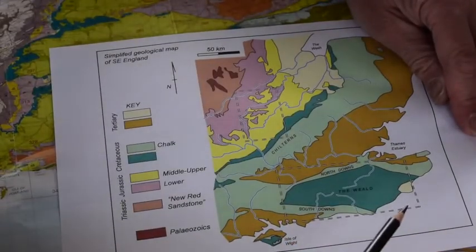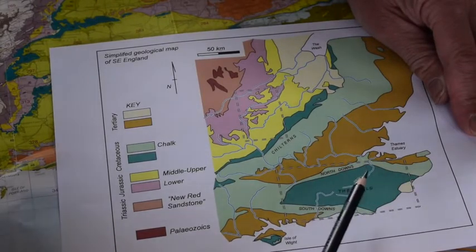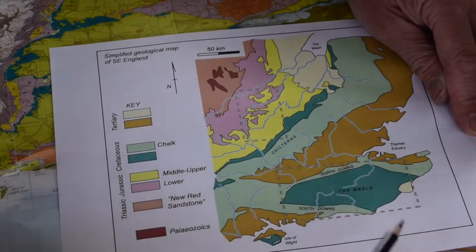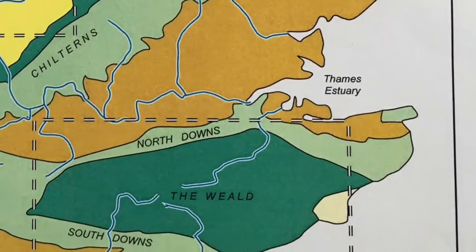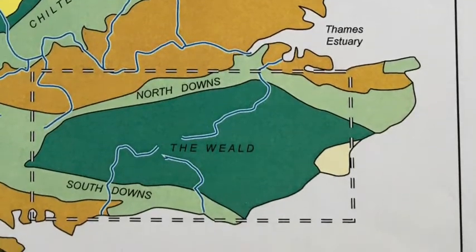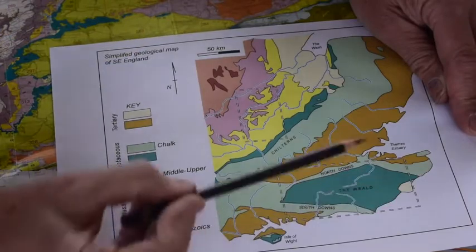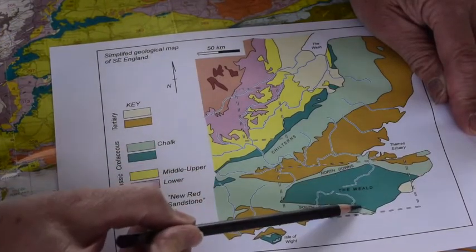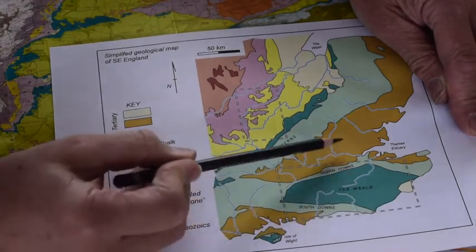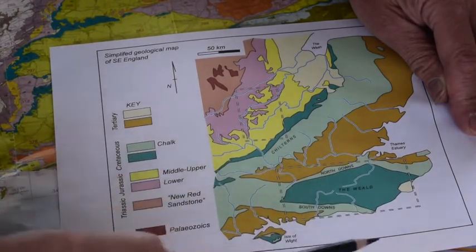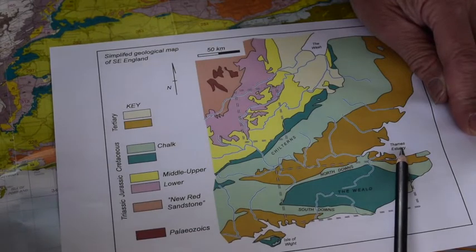But down here in the area of southeast England known as the Weald, we have a more complicated arrangement. If you imagine going on a journey from here, which is where London is, down to the south coast, you cross the North Downs, which are these upper Cretaceous chalk rocks, across the Weald, and then we encounter these chalk rocks again as we hit the south coast. So a more complicated structure here compared to the simple sequence we see in this direction.